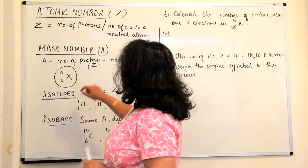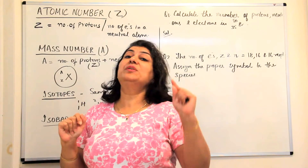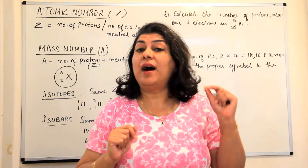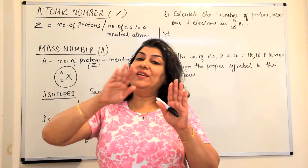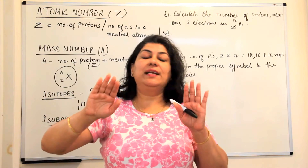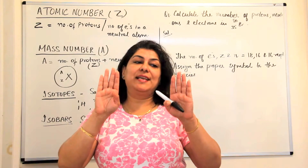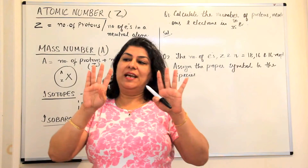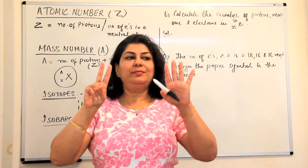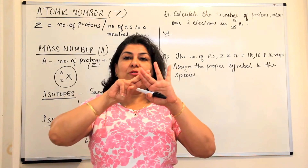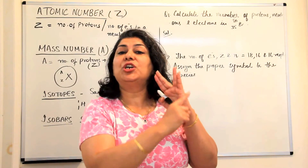One more important point: atomic number is equal to the number of protons and the number of electrons only if the atom is neutral. But if the atom is an ion — if it has lost electrons in a chemical reaction — say it had four protons and four electrons and lost two electrons. Now there are only two electrons, which cancel out two protons, but two positive charges are left. Therefore, the remaining ion has a charge of two positive.